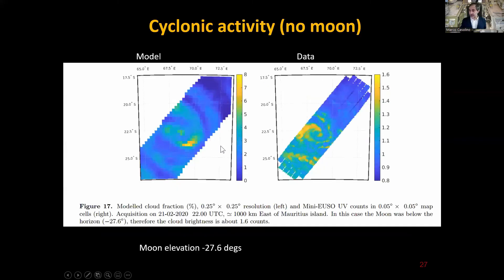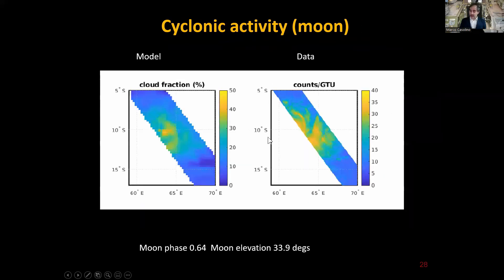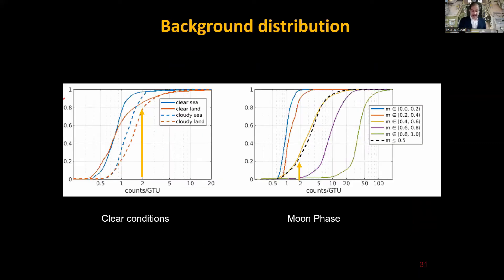We can observe cyclonic and cloud structures. This is in case of no moon. On the left side we have the model done by Lesya Gorodski. They take the cloud maps from the satellite devoted to this task, create the model, and actually this cyclonic structure is very well matched by our data. The resolution is lower but the feature is there. This is the brightness of the clouds in absence of the moon: 1.6 photo counts per GTU. If there is the moon, you have another cyclonic activity similar structure, but here you see the reflection of the moon, so your counts are 40 counts per GTU, much much brighter.